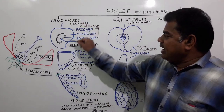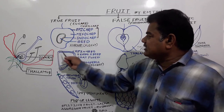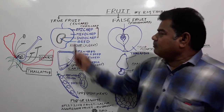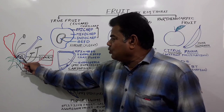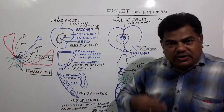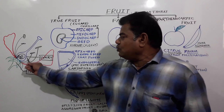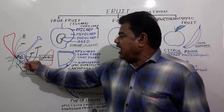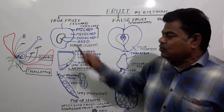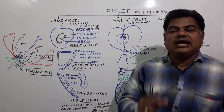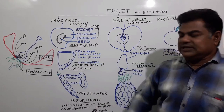In the case of mango, after fertilization fruit formation takes place from the ovary, and the ovule gets converted into seed. Such a fruit we call a true fruit.